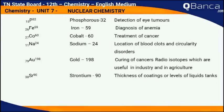CO27-60 Isotope cobalt-60 — use: treatment of cancer. NA11-24 Isotope sodium-24 — use: location of blood clots and circulatory disorders. AU79-198 Isotope gold-198 — use: curing of cancers.